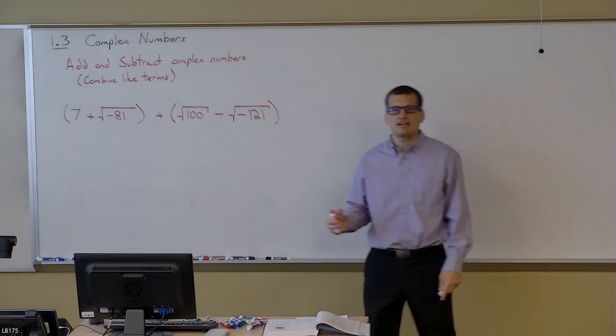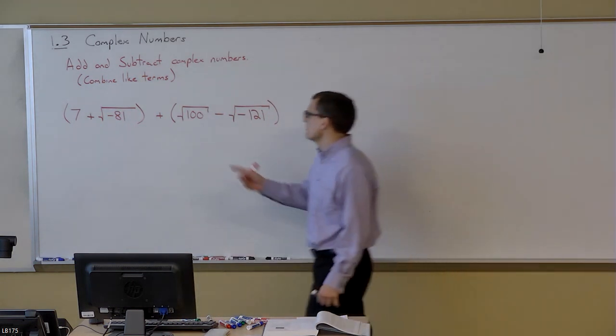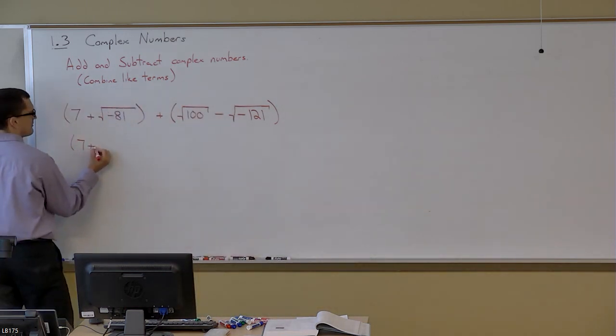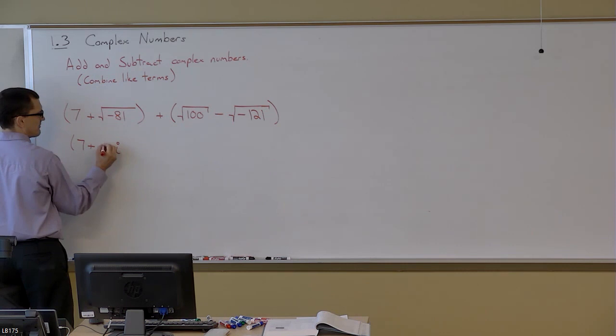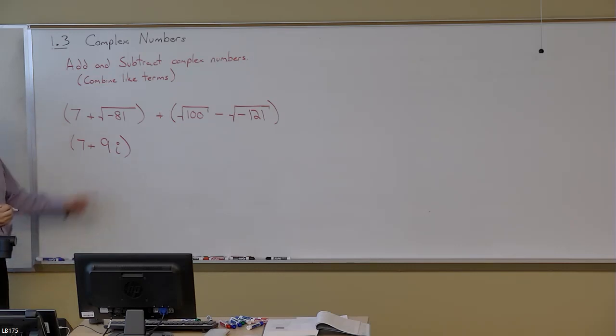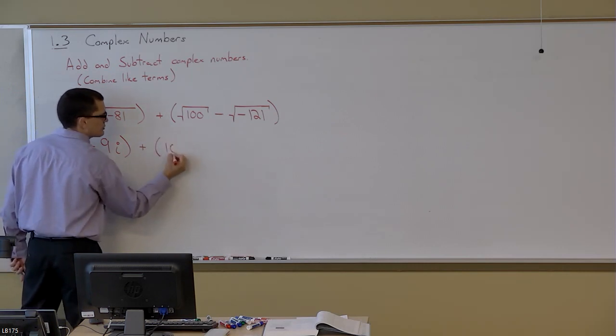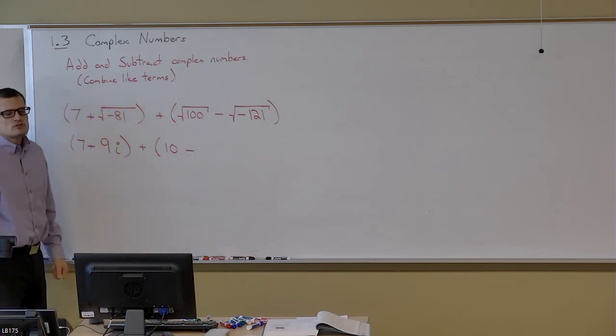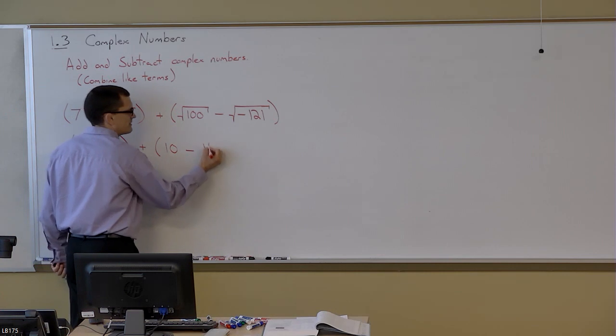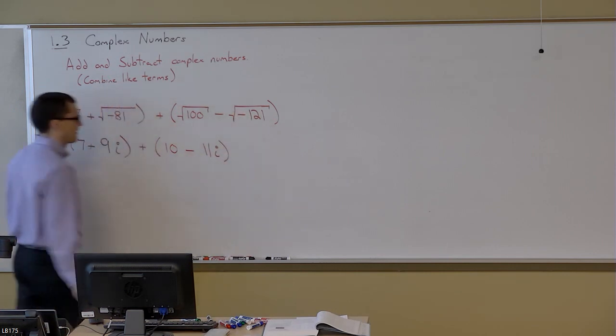Some of them will involve i, others will not. When I'm doing this, 7+√(-81)—the square root of the negative becomes an i, and √81 becomes 9. So the square root of negative, that's where I get the i. The 81 gives me the 9. So I get 9i as that term. And then +√100 is just regular 10. √121 is 11. Square root of the negative is an i.